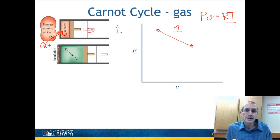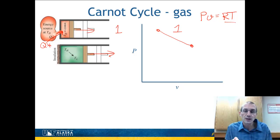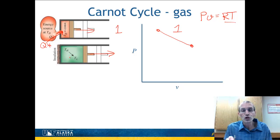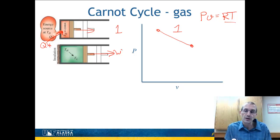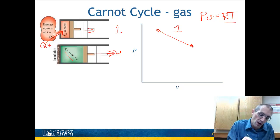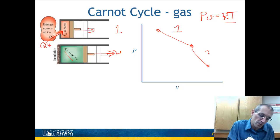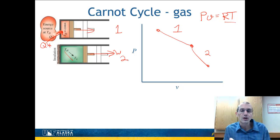The next step of the cycle is to continue expanding the volume, but now the system is insulated so there is no heat input at all. Since work is being generated but no energy is added, the internal energy must go down, so the temperature decreases. We go from a high temperature to a lower temperature at a larger volume — this is step two of the Carnot cycle.